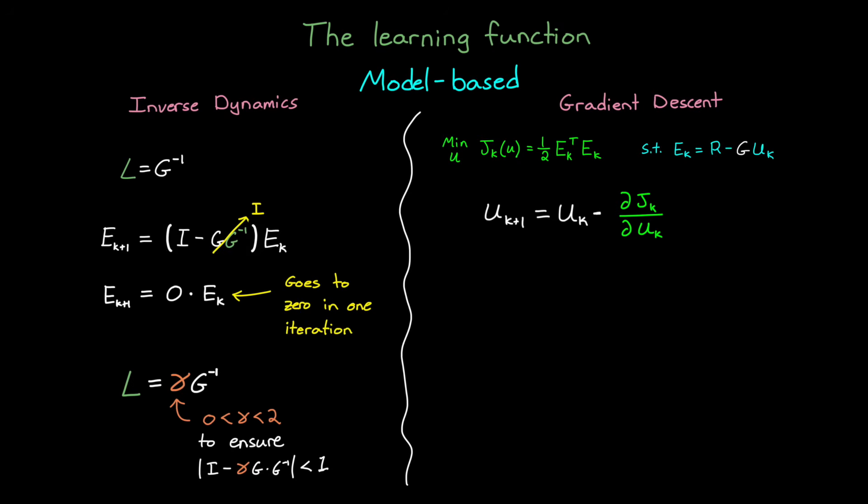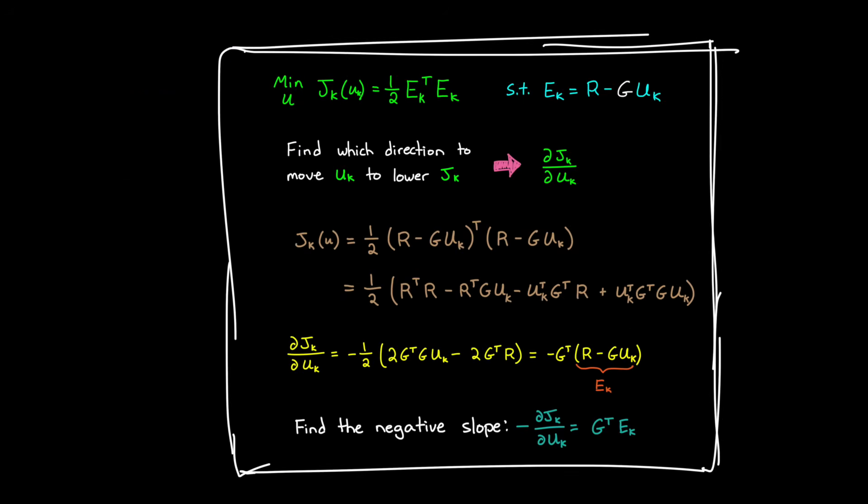Now, to take this partial derivative, there are a few steps, and I'm going to quickly go through them right here. So you may want to pause the video to go line by line yourself if I go too fast. But to start, we substitute r minus gu for e in the cost function to get the relationship between u and j, and then we expand the equation. Now we take the partial with respect to u of each of these terms and sum like terms to get this result. And then here, the one-half and the twos cancel out, and then we can pull g transpose out from both terms.